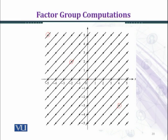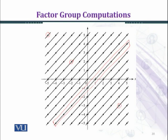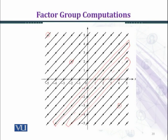The identity coset, 0 plus H, is the cyclic group H generated by (1,1) — that is, the line through the origin. The coset (1,0) plus H is another parallel line, (2,0) plus H is the next line, and (3,0) plus H is the coset plotted as the next line below.